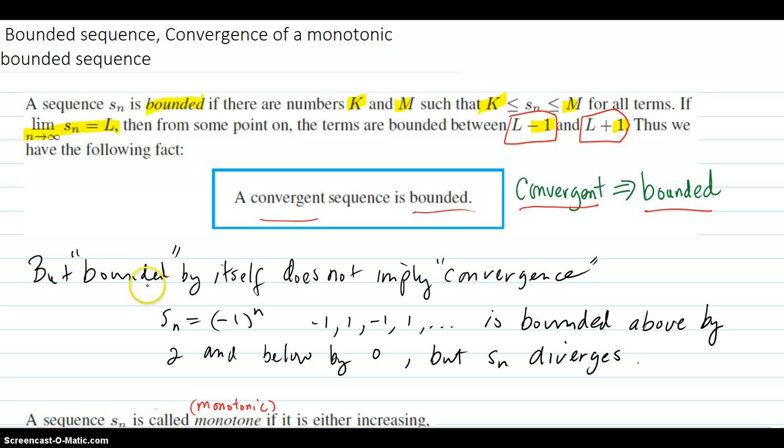But bounded just by itself doesn't mean that the sequence is going to converge. So it does not imply convergence. A simple example is the toggle switch of negative one to the n, which produces negative one, one, negative one, one forever.